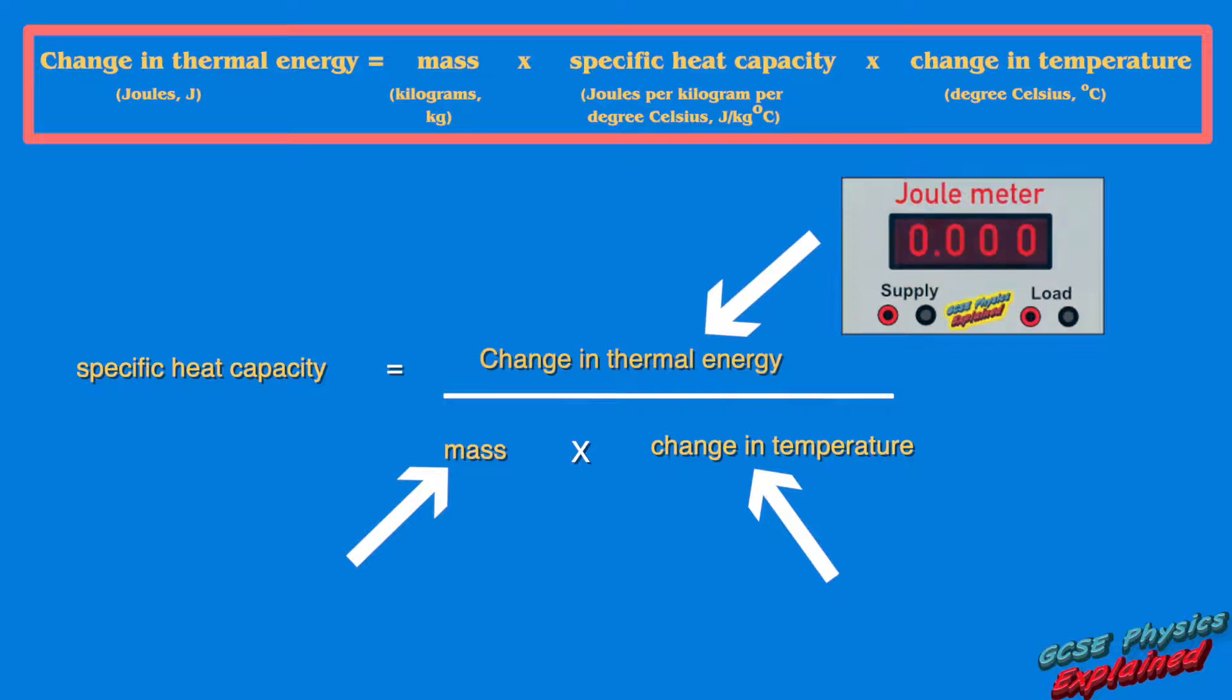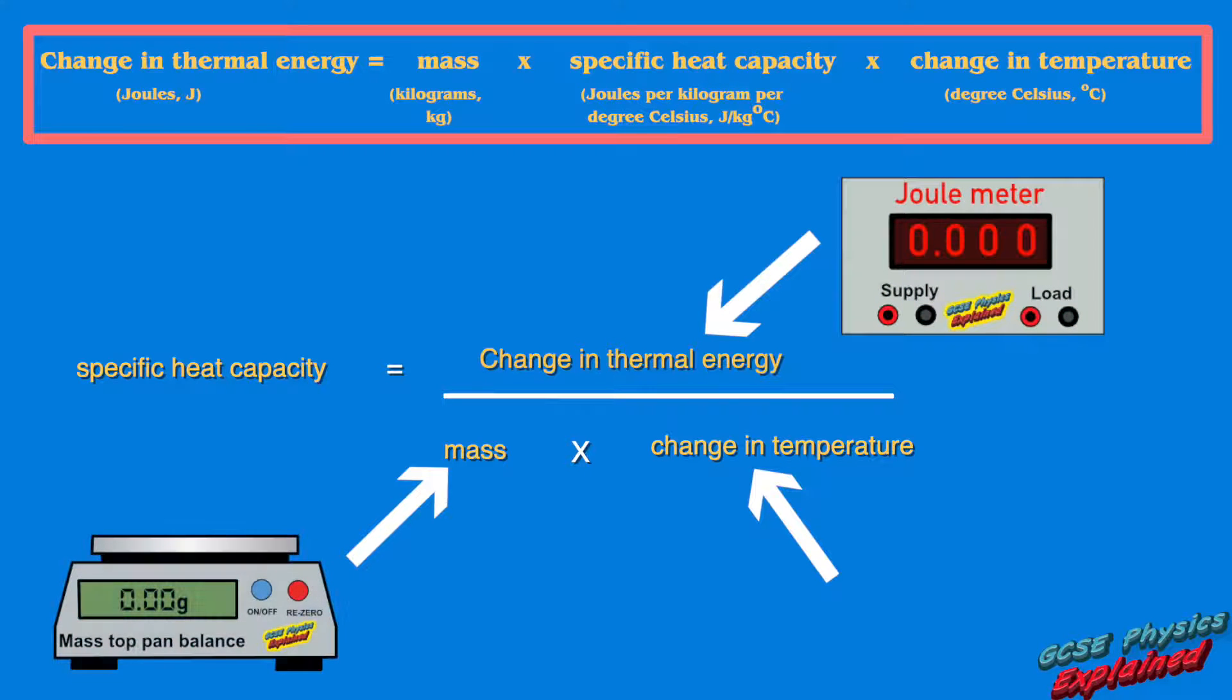We can use a joule meter to measure the change in thermal energy. We can use a mass top pan balance to measure the mass. And we can use a thermometer to measure the change in temperature.